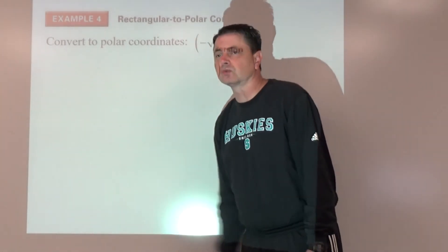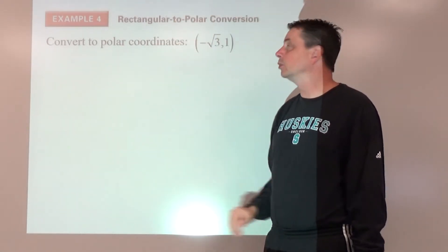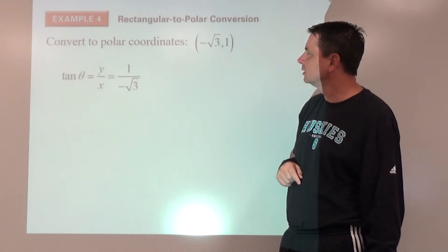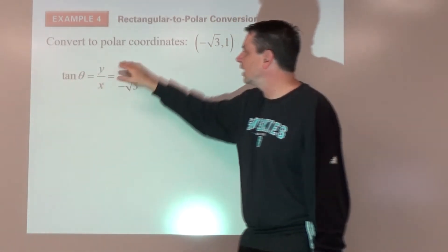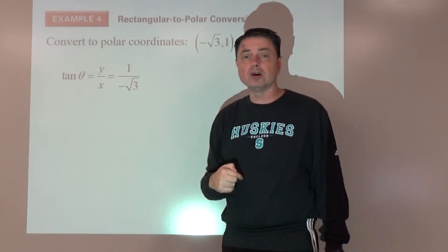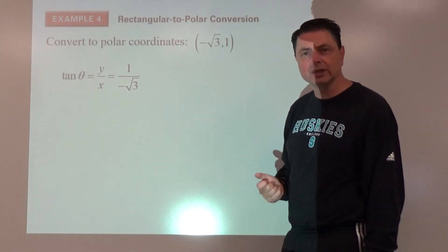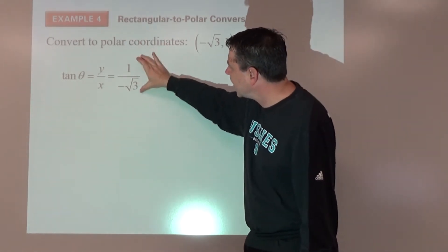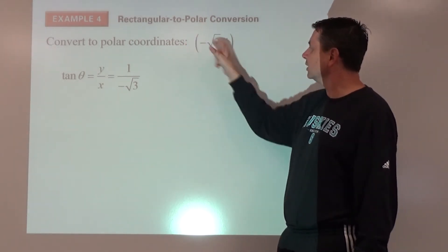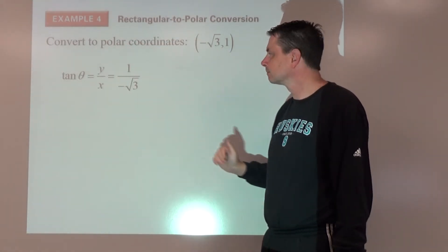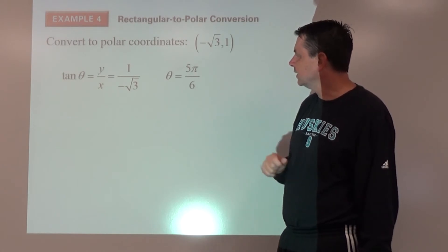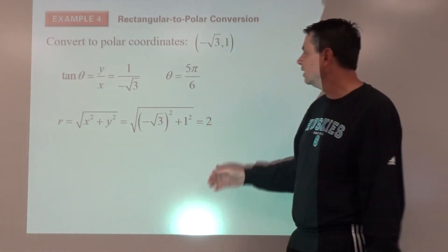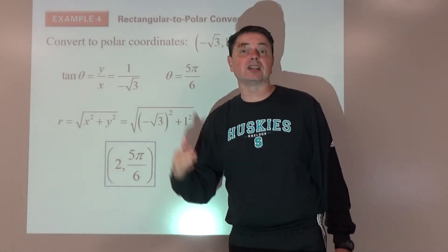Example number four: convert rectangular coordinates (-root 3, 1) into polar. Start with r: r squared equals x squared plus y squared, giving r equals 2. For theta: tangent theta equals y over x, so 1 over negative root 3, which is negative 1 over root 3. We should recognize that value. Since we're going left and up — quadrant two — theta is 5π/6. So the polar coordinates are 2 comma 5π/6.